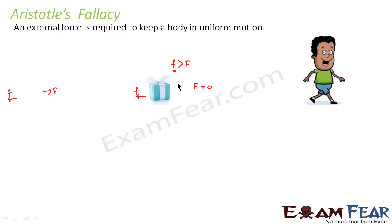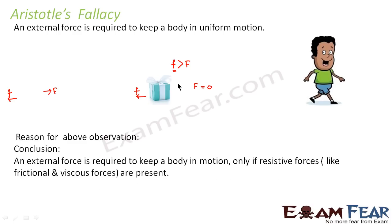So what did we see? In this scenario, it was not the external force that kept the body in uniform motion. External force was needed to make the body move, and when the external force was taken away, due to friction the body came to rest. The major role in making the body move and stopping it was played by the frictional force. The conclusion was that an external force is required to keep a body in uniform motion only if resistive forces like frictional force or viscous forces are present.